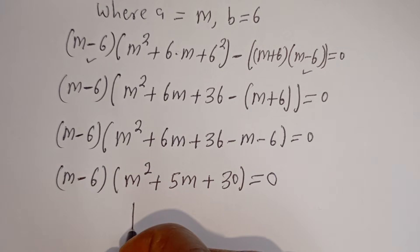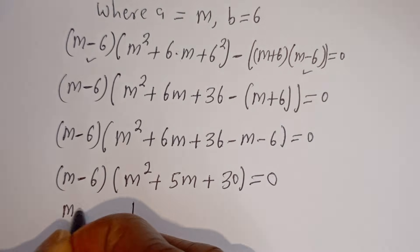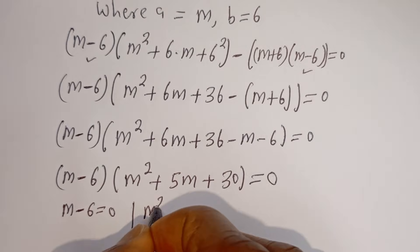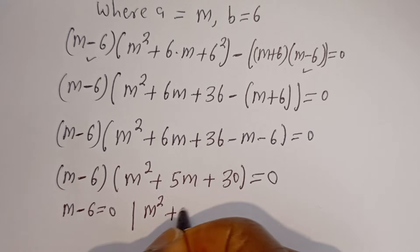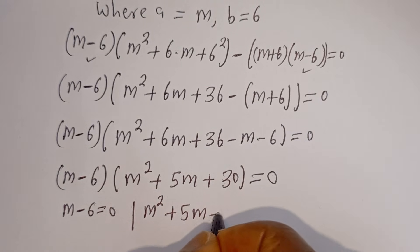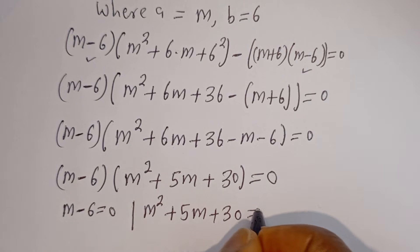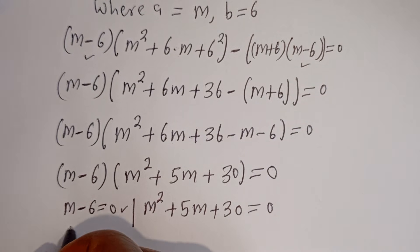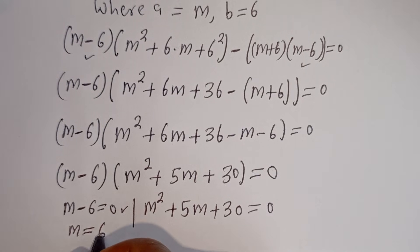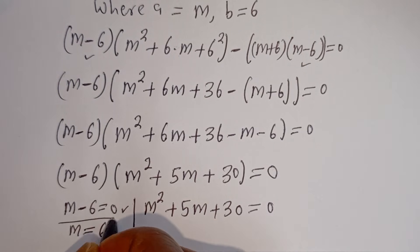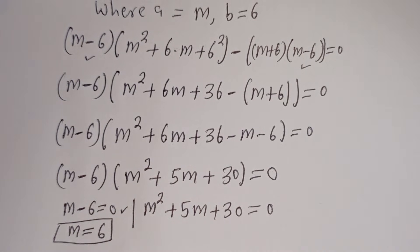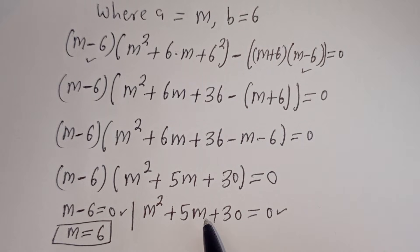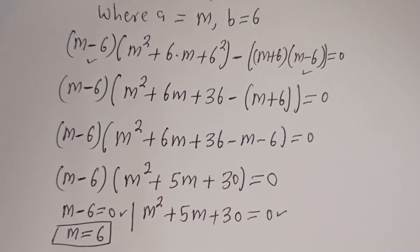There are two cases here. The first case is M minus 6 equals 0, and the second case is M squared plus 5M plus 30 equals 0. From the first case, M equals 6 — this is the first value of M. From the second case, this is a quadratic equation; let us solve it using the quadratic formula.